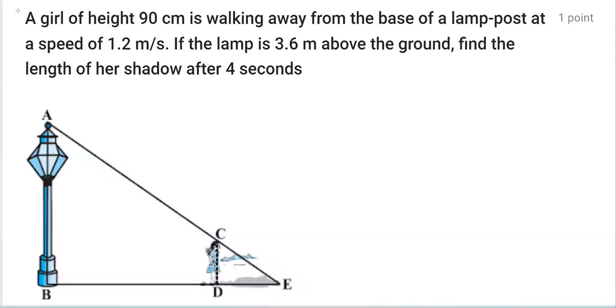In this question, a girl which is 90 centimeter high is walking away from the base of the lamppost at a speed of 1.2 meter per second.